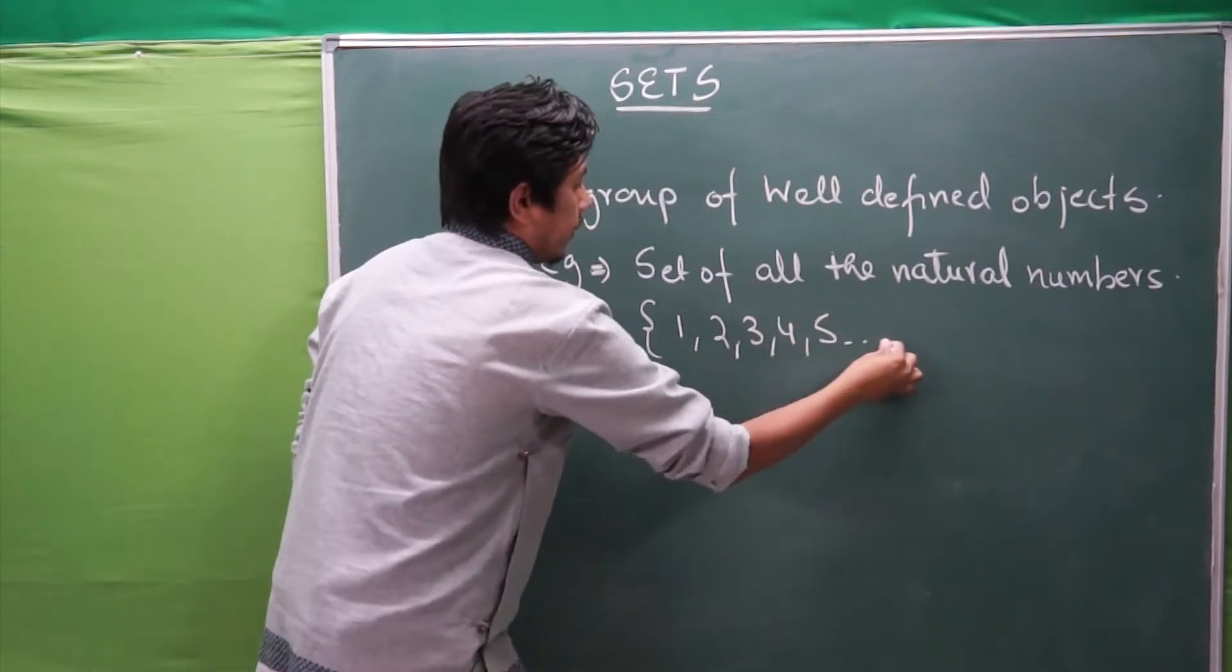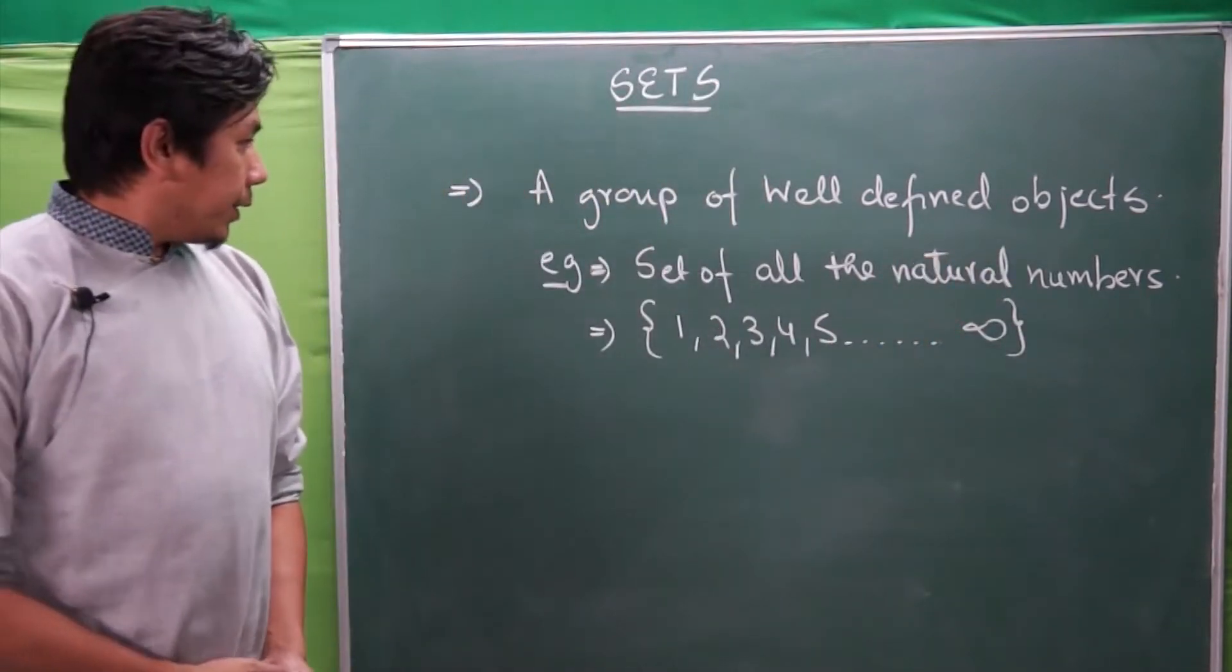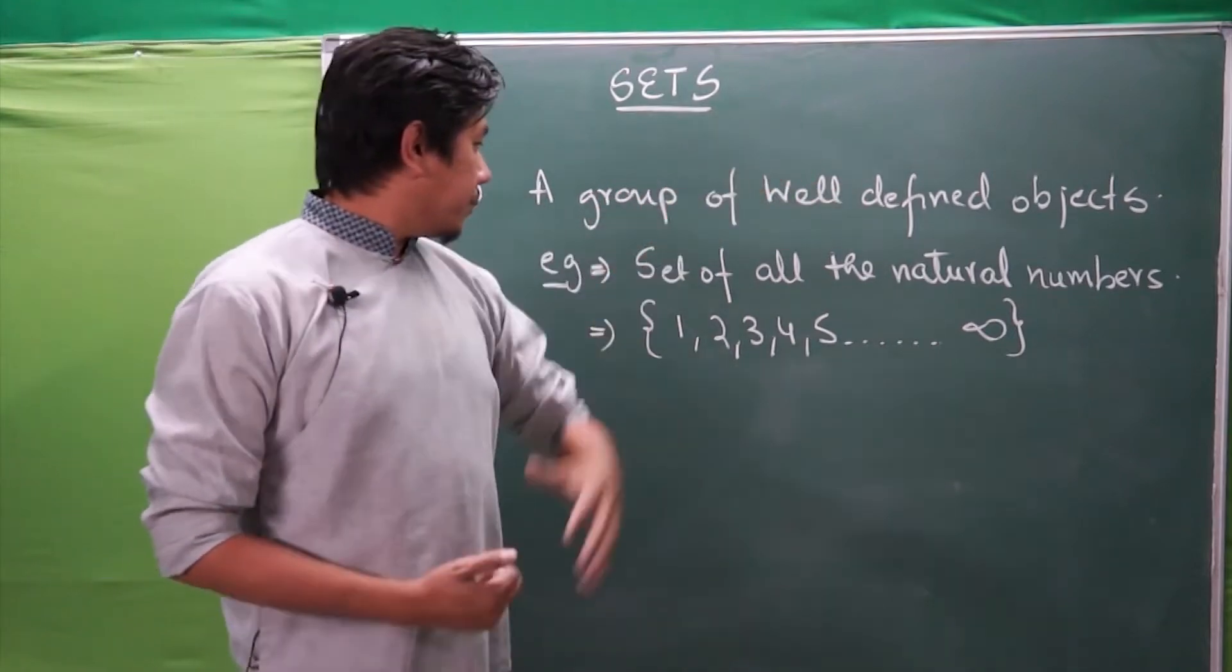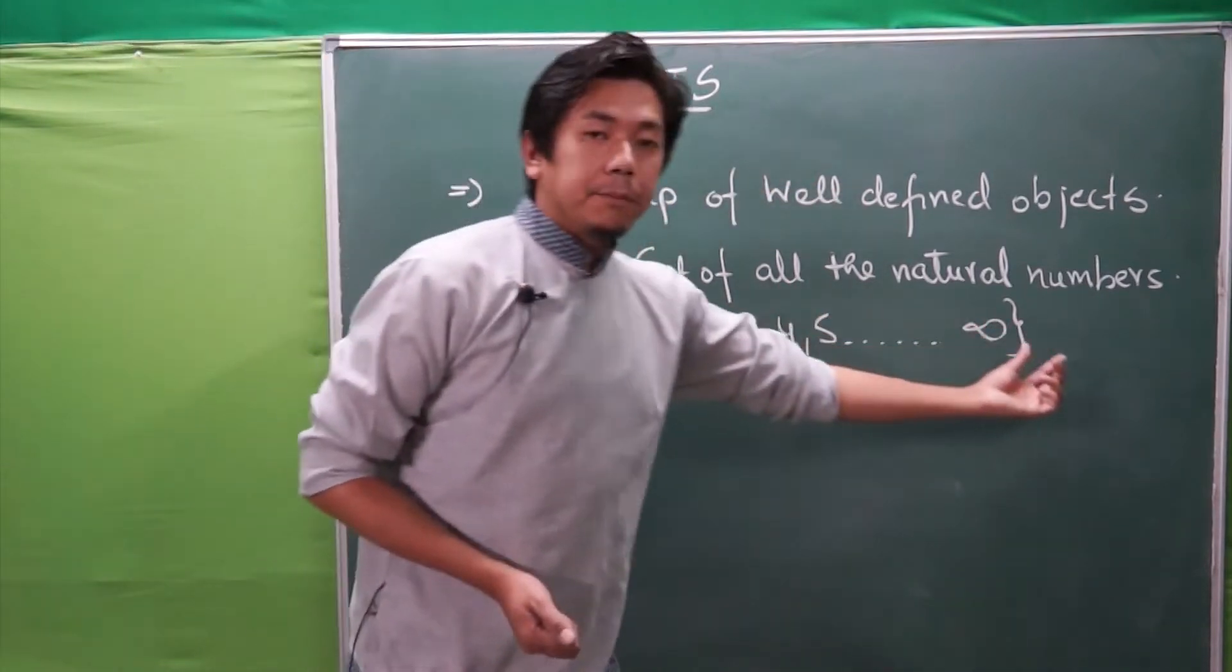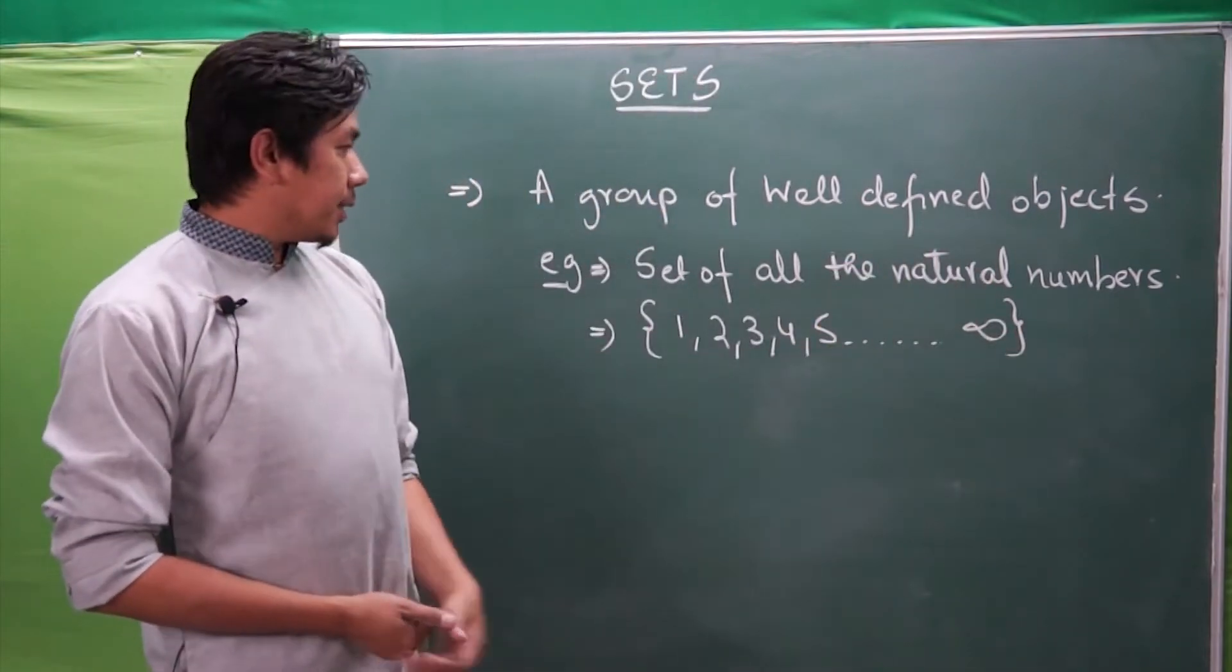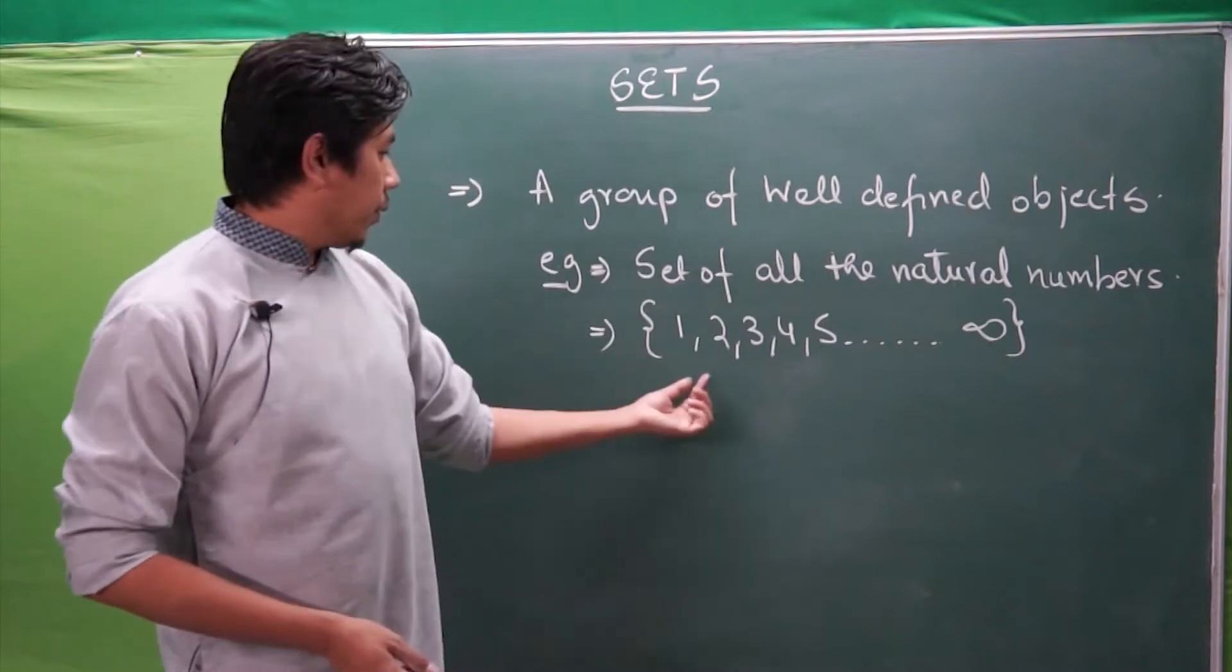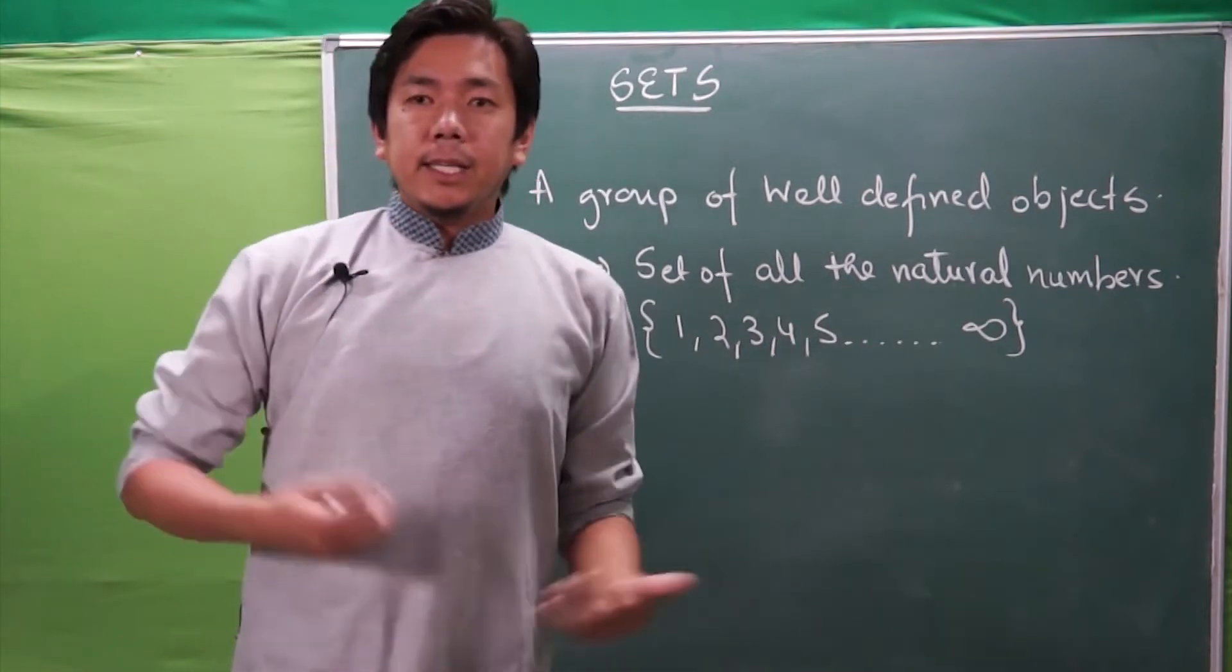One, two—we are beginning from one because the condition over here is natural numbers—four, five, so on, until the unknown infinite. So first thing, what is a set? It is a group of well-defined objects. How is it represented? It is represented through braces. What are the elements in this particular case? It is natural numbers: one, two, three, four, so on. Likewise we can have many daily examples.